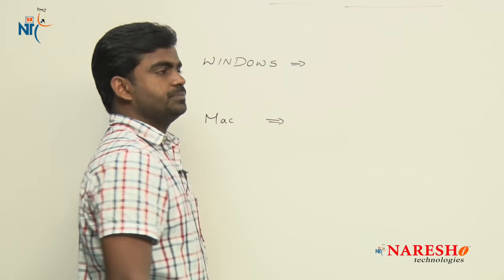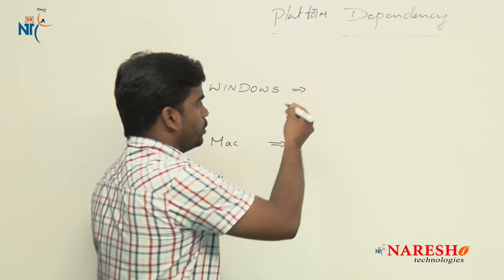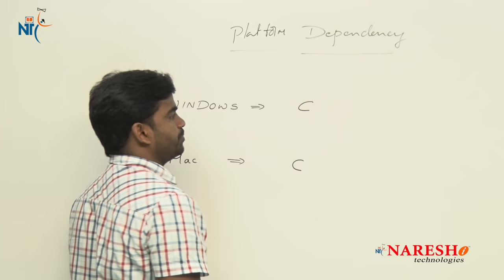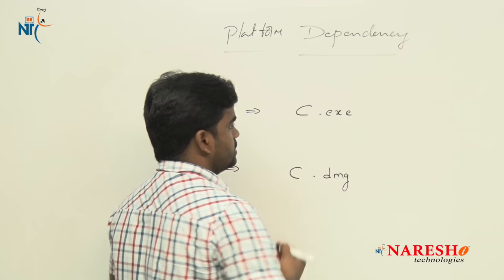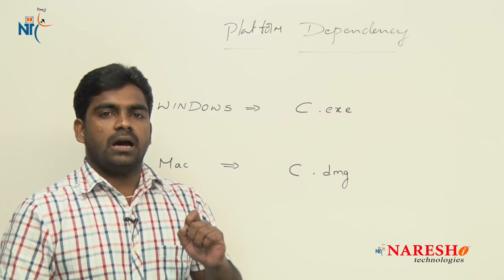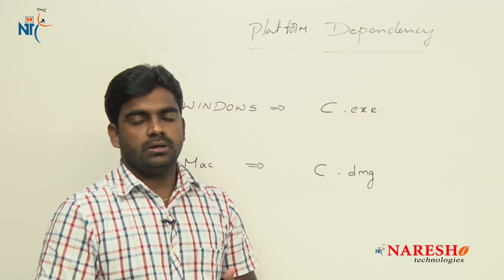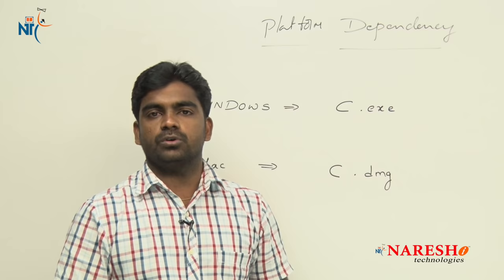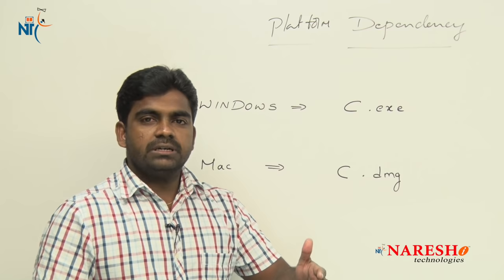Consider two operating systems: Windows and Mac. Windows understands .exe files and Mac understands .dmz files. Every application is a standalone application, including programming languages. So we need to download and install depending on the operating system we are using — C application for Windows, C software for Mac. For different operating systems, different C applications are available in the market.